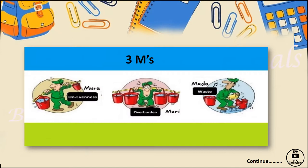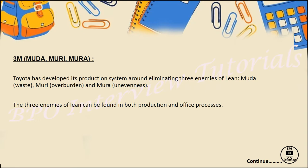Let's move to the topic — lean management, the three M's known as Mura, Muri, and Mura. This diagram itself explains the entire thing, but we will go with the theoretical part first and see what kind of questions HR actually asks in the interview. This is a very important topic, so please listen carefully, as HR frequently asks such questions in interviews.